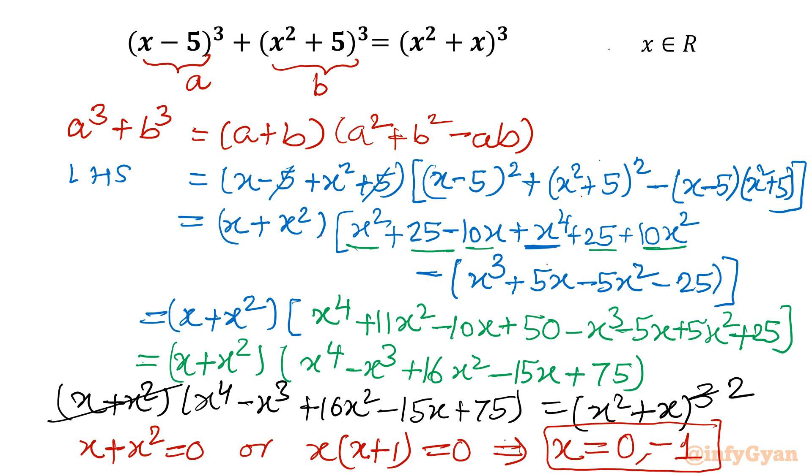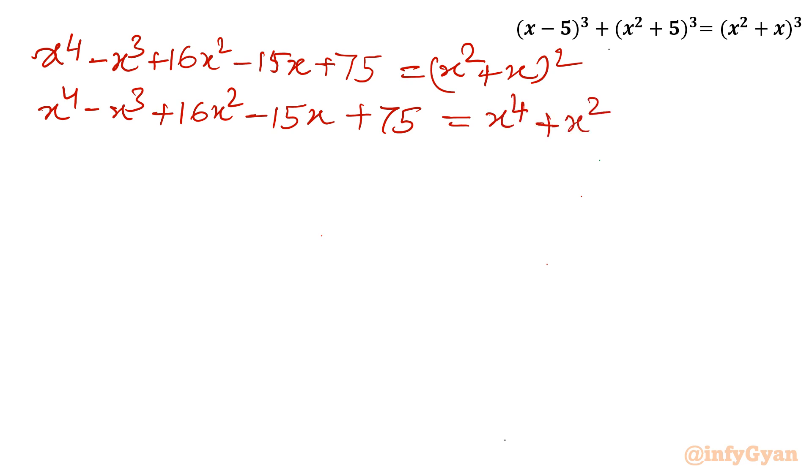Now what is left, we will only equate RHS is (x² + x)² and LHS is x⁴ - x³ + 16x² - 15x + 75. Let's put over there. So I will write x⁴ - x³ + 16x² - 15x + 75 equal to (x² + x)². Now I will write x⁴ - x³ + 16x² - 15x + 75 equal to, using (a+b)² = a² + b² + 2ab, so x⁴ + x² + 2x³.